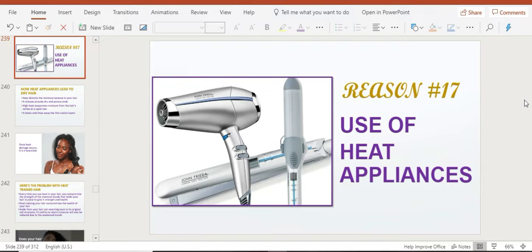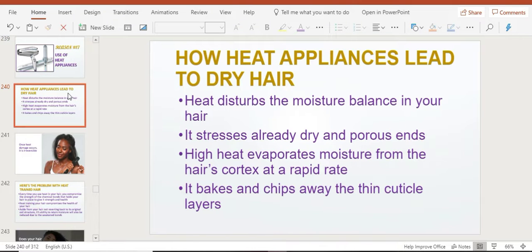Alright, reason number 17 is the use of heat appliances. So now, how does it affect your hair's moisture retention capability and how does it contribute to dry hair? We all know by now that heat disturbs the moisture balance in our hair because it puts stress on already dry and porous ends.